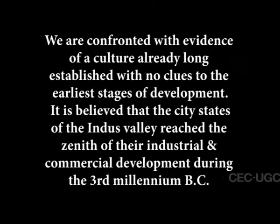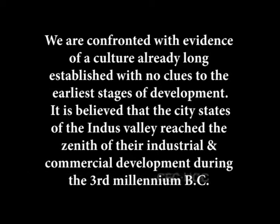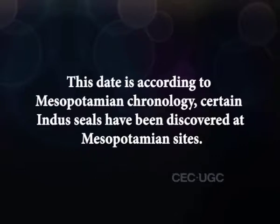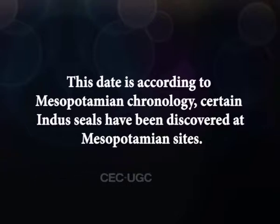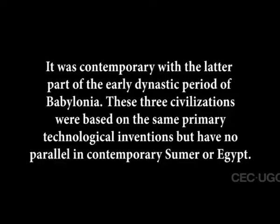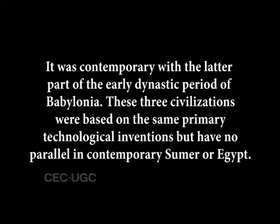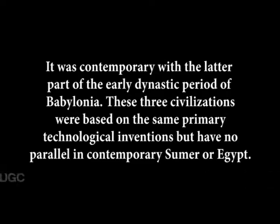It is believed that the city-states of the Indus Valley reached the height of their industrial and commercial development during the 3rd millennium BC, according to Mesopotamian chronology. Certain Indus seals have been discovered at Mesopotamian sites, and it was contemporary with the later part of the early dynastic period of Babylonia. These civilizations were based on the same primary technological inventions but have no parallel in contemporary Sumer or Egypt.